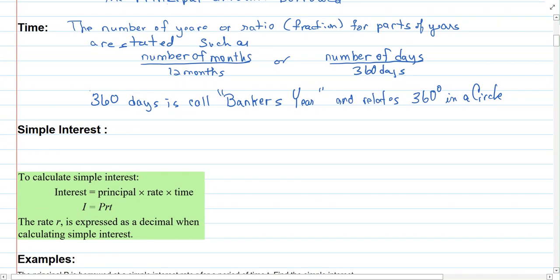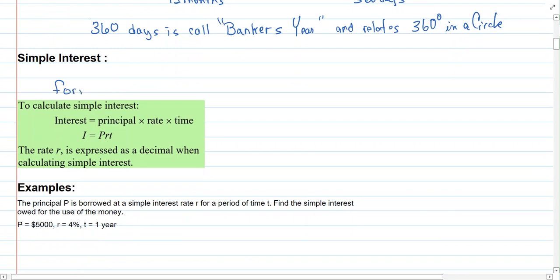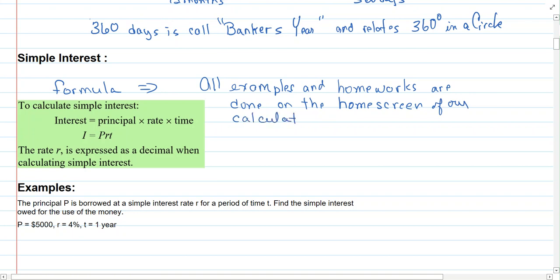Now we're talking about simple interest. Here's the formula. All examples and homeworks are done on the home screen of our calculator. So we're getting the framework here. I know I always take a definite slow time to describe everything.